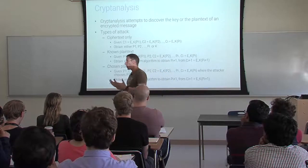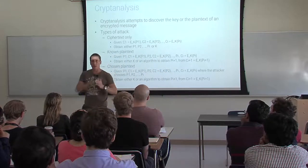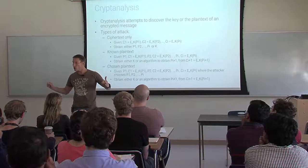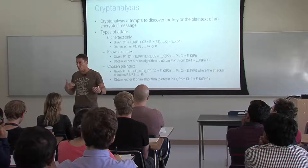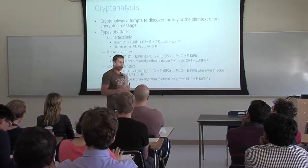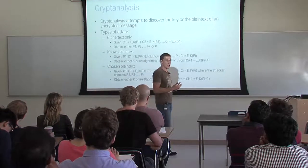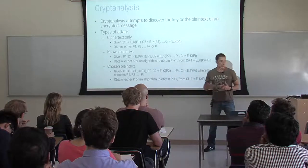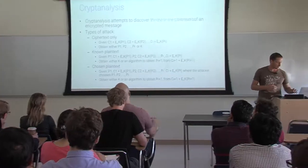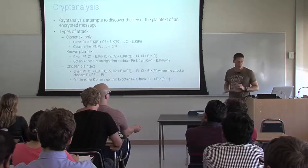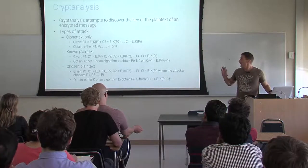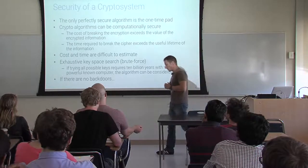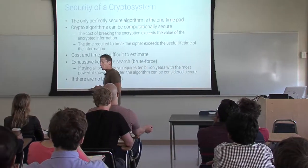This is a very high-level view of the problem. There are many ways to do cryptanalysis that are not described here. There is only one provably secure cryptosystem called a one-time pad. Fundamentally, it takes a message, generates a completely random string of bits, XORs the message with this string of bits, and sends the encrypted message. The key is this randomly generated string of bits.